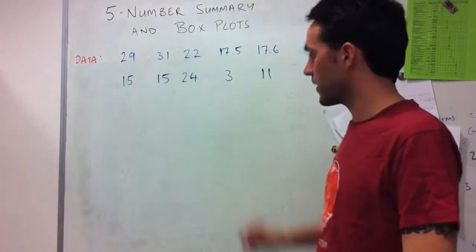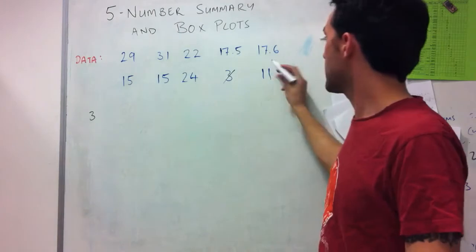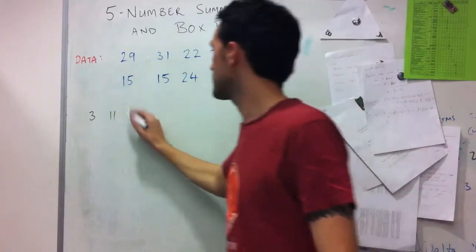So grab this data and say, okay, 3 is the smallest value, and then 11, and then I've got 2 lots of 15.